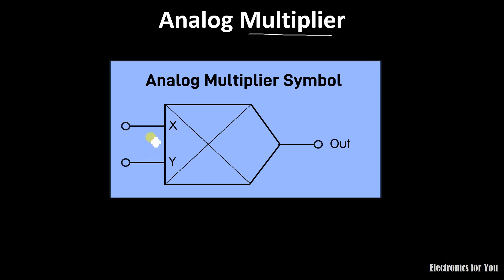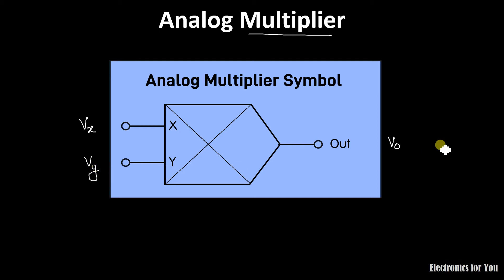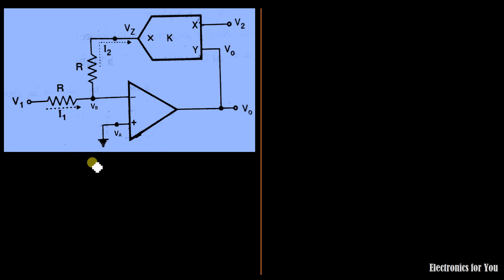Before understanding the analog divider using multiplier, you must know the analog multiplier. The symbol used for analog multiplier has two inputs, let them be X and Y. The output voltage V0 can be calculated as: if voltage at X is Vx and voltage at Y is Vy, then output voltage is proportional to k times Vx upon Vy.